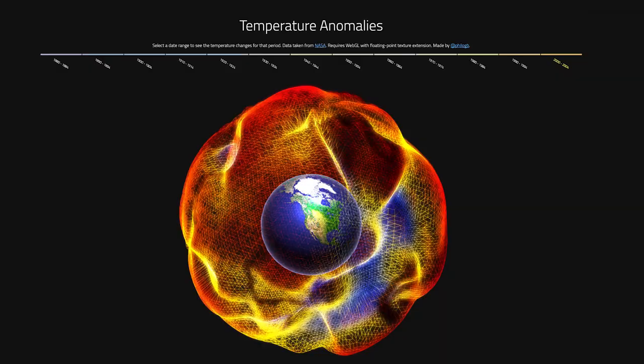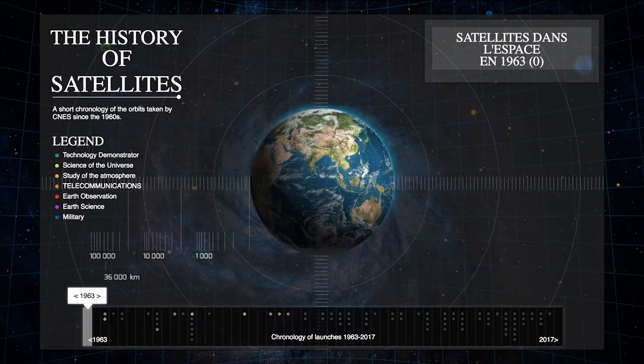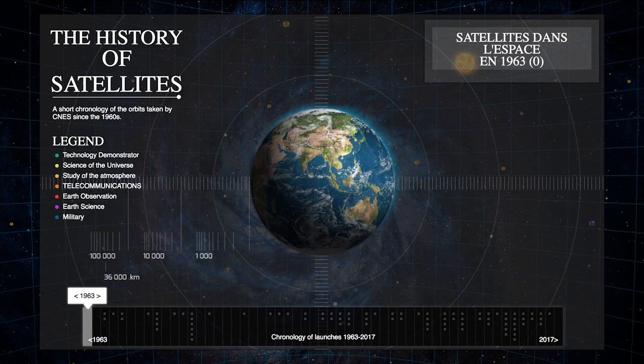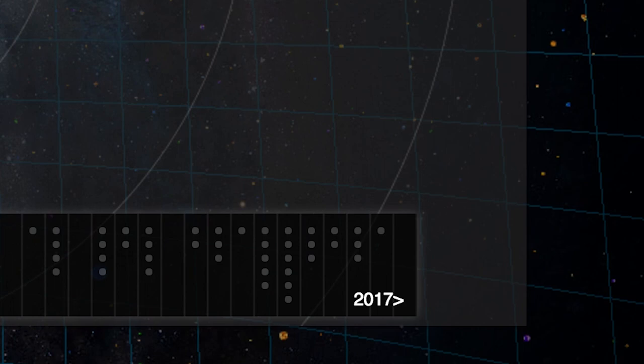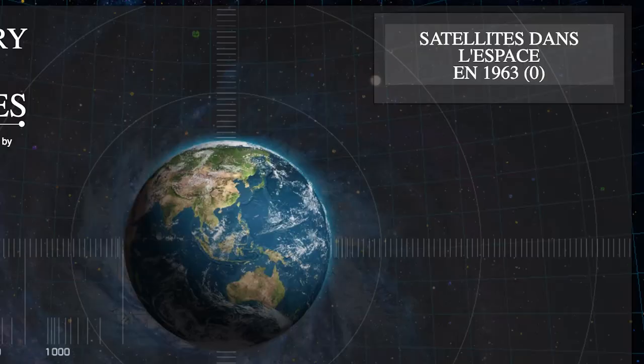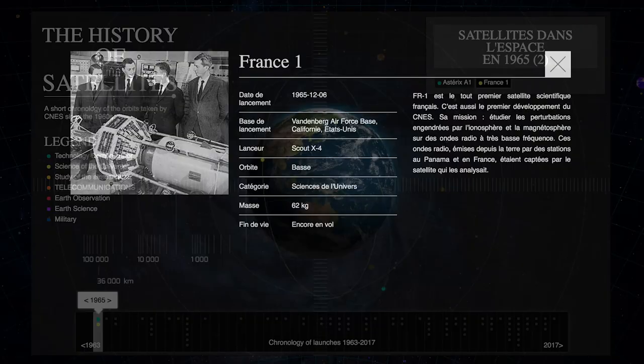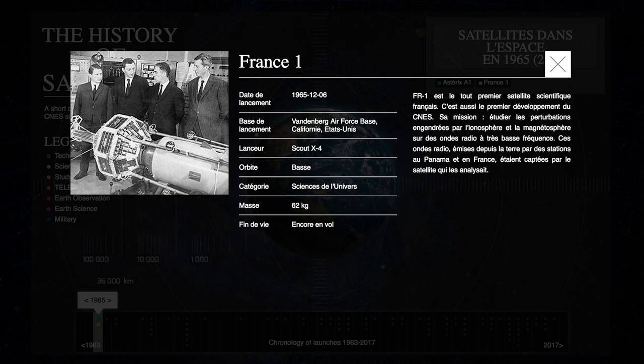Just like the timeline on the History of Satellites, which shows you the history of the French space agency CNES's satellites. From 1963 to 2017, it shows you which satellites were orbiting Earth each year. In 1965, FR1 was the first French scientific satellite. As you scroll through you can see the dramatic increase, and this year there are 54.